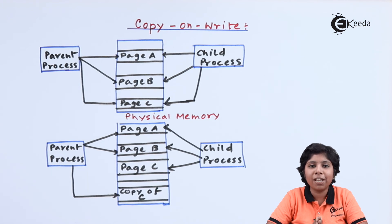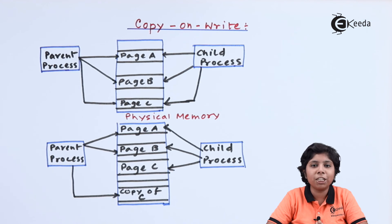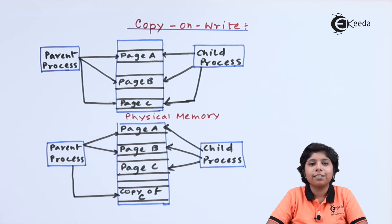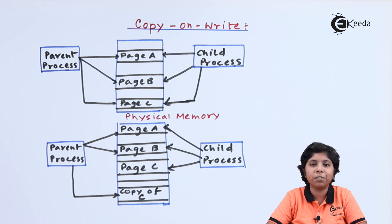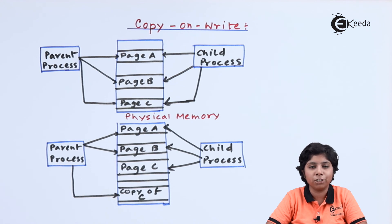vfork must be carefully handled, as the parent process address space can be modified by the child process. It is an extremely efficient method for process creation in many Unix versions and can be used without the fork with copy on write system. vfork is especially useful when the child process calls the exec system call immediately after creation, since no copying of pages is necessary. It is often implemented for Unix shell division creation algorithms.